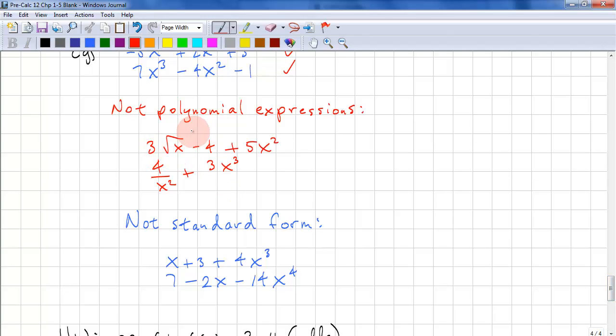3 root x. This root is an exponent of a half. This, 4 over x squared plus 3x cubed. This is a negative exponent. So those are not polynomial expressions.